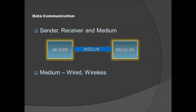Now, coming to the communication system, the basic elements of a data communication system are three: sender, receiver, and the medium or channel. The sender is a device which sends information or a message, and the receiver is the one who receives that information. The path through which data is transmitted from one device to another is called the transmission media or communication channel. It may be a wire, a fiber optic cable, or something else.